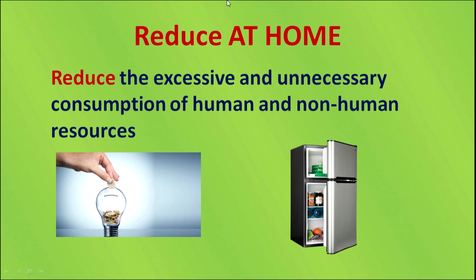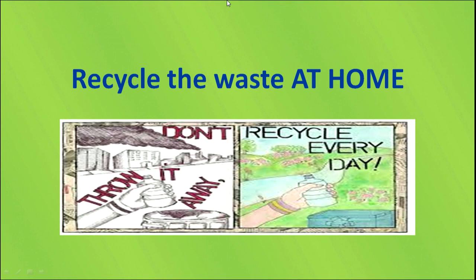Reduce at home: reduce the excessive and unnecessary consumption of human and non-human resources. For example, closing the door of the refrigerator will reduce the use of electricity and save money. Recycling at home: we can collect wet waste from the kitchen and put it in a pot, cover it with leaves, and it will develop into compost which can be used as manure for garden or plant pots.